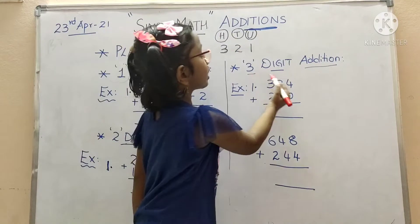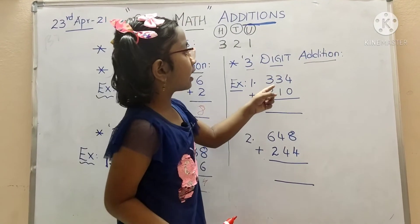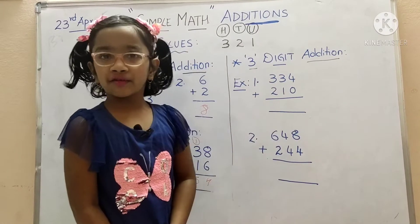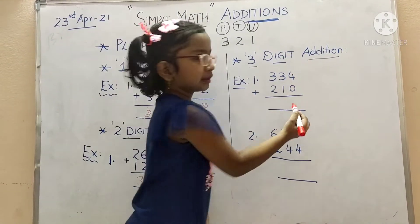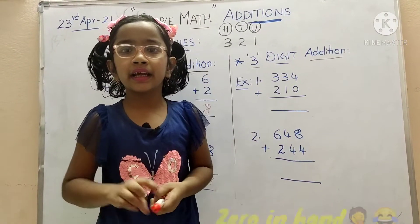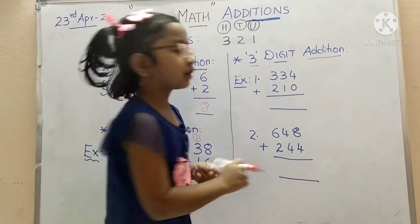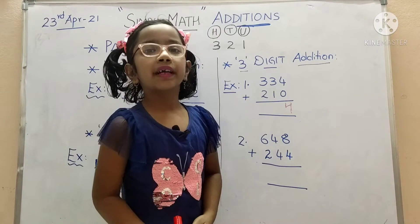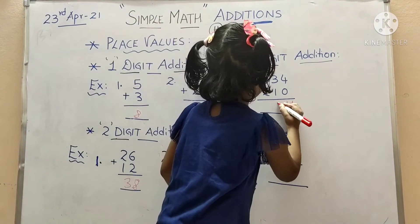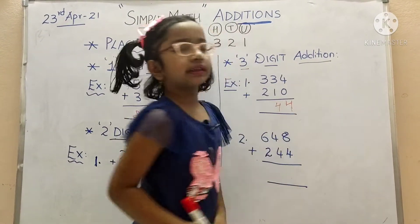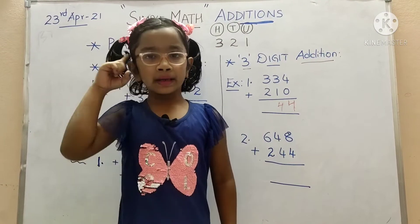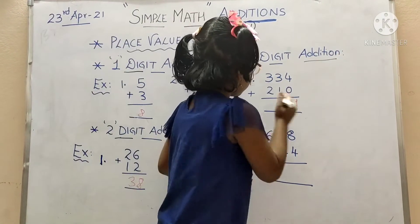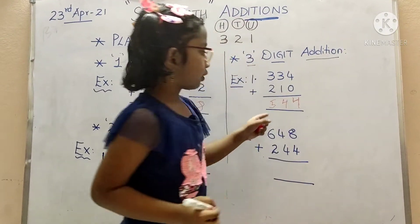Let's start with three-digit addition. Three hundred and thirty-four plus two hundred and ten. We're going to start from the units place: four plus zero — four in mind — the answer is four. In the tens place: three plus one equals four. Now hundreds: three plus two — three in mind, two in hand — after three: four, five. The answer is five. The total answer is five hundred and forty-four.